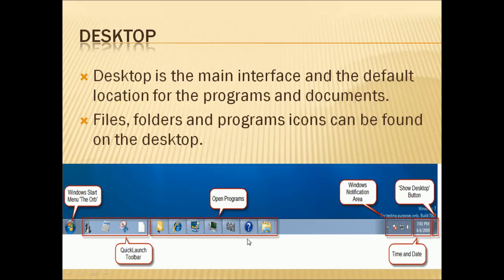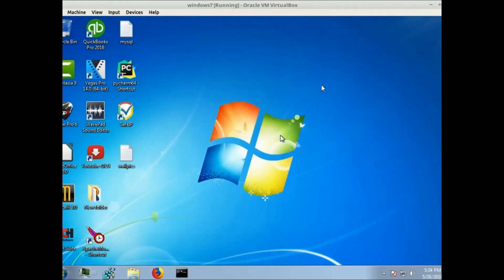At the bottom of the desktop we can see the taskbar. The taskbar consists of the start menu, the quick launch area, the notification area, and the show desktop button. The start menu lets you move to any program. The quick launch area displays currently opened programs. The notification area shows time, date, and other notifications. The show desktop button brings you directly to the desktop from any other screen.